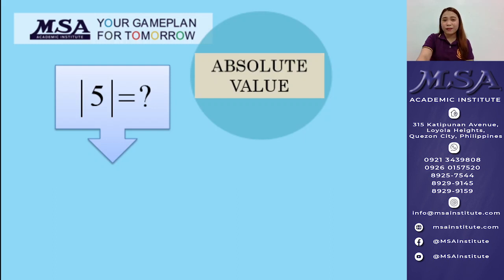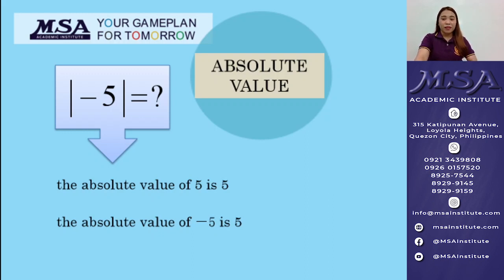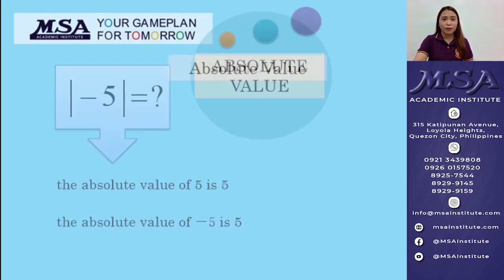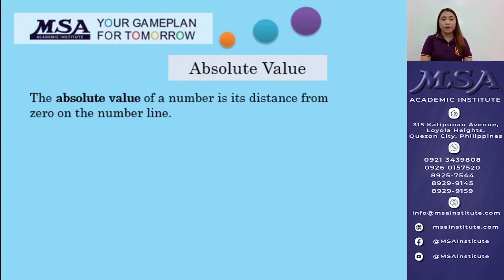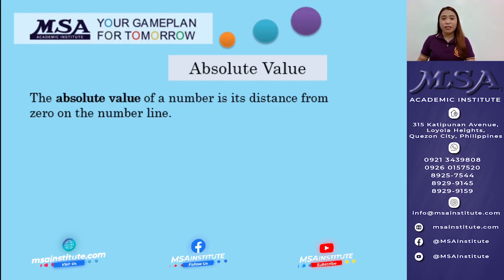What is the absolute value of 5? The absolute value of 5 is 5. How about the absolute value of negative 5? The absolute value of negative 5 is also 5. They are two different numbers — positive 5 and negative 5 — but their absolute value is the same. The absolute value of a number is its distance from 0 on the number line, which means we don't have negative results because it's a distance.